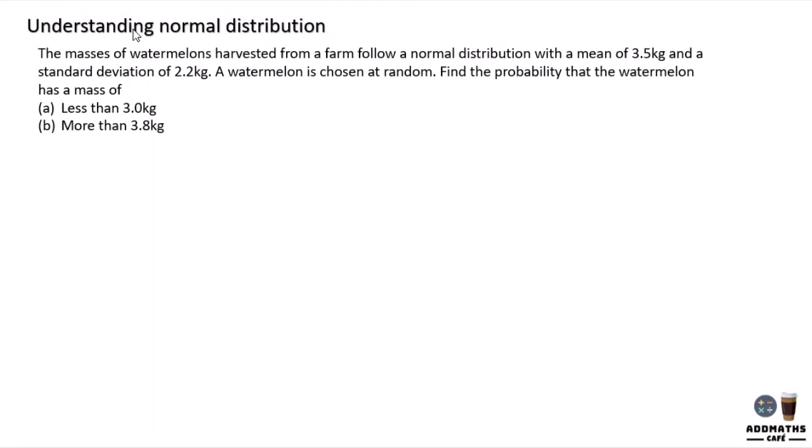Let's solve this question. The masses of watermelon harvested from a farm follow a normal distribution. You know you need to use normal distribution with a mean. So this is your mean, equal to 3.5 kg and the standard deviation which is 2.2 kg. A watermelon is chosen at random. Find the probability that the watermelon has a mass less than 3 kg.